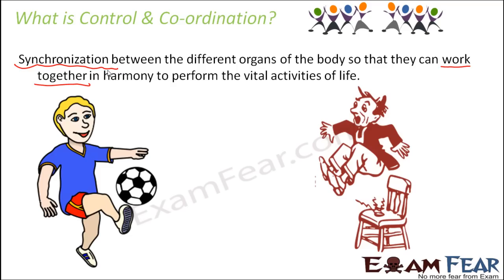Similarly, when you get an electric shock, you immediately jump off. Your sense organ — your skin — felt the electric shock and sent that information to your brain. Then your brain told you to jump, and then your muscles jumped. There has to be synchronization between different parts of your body so that you can do the appropriate thing at the appropriate time.